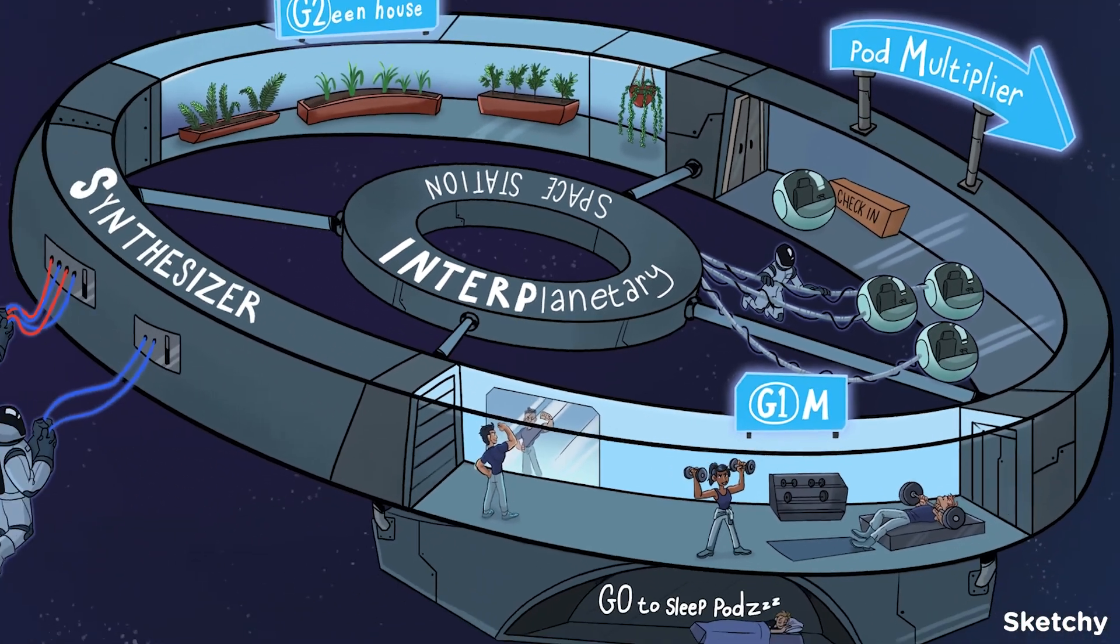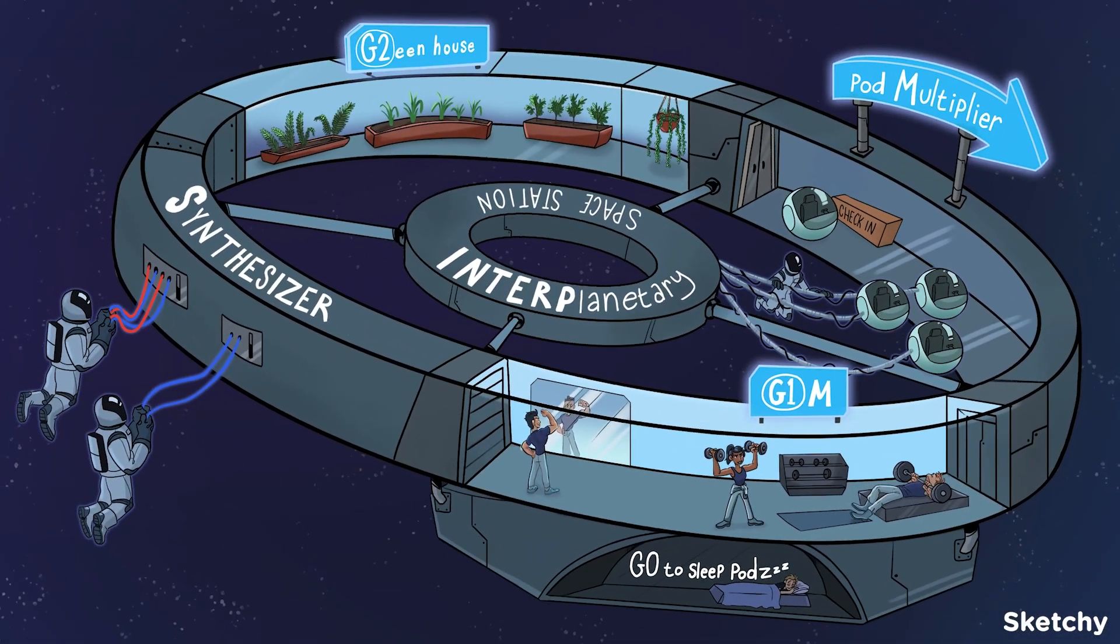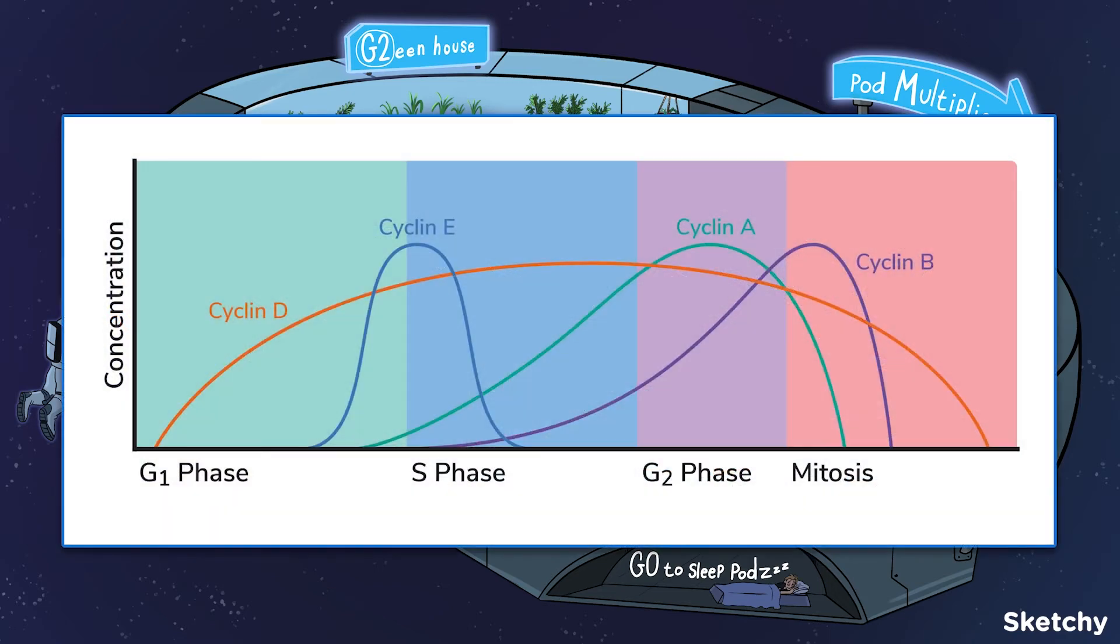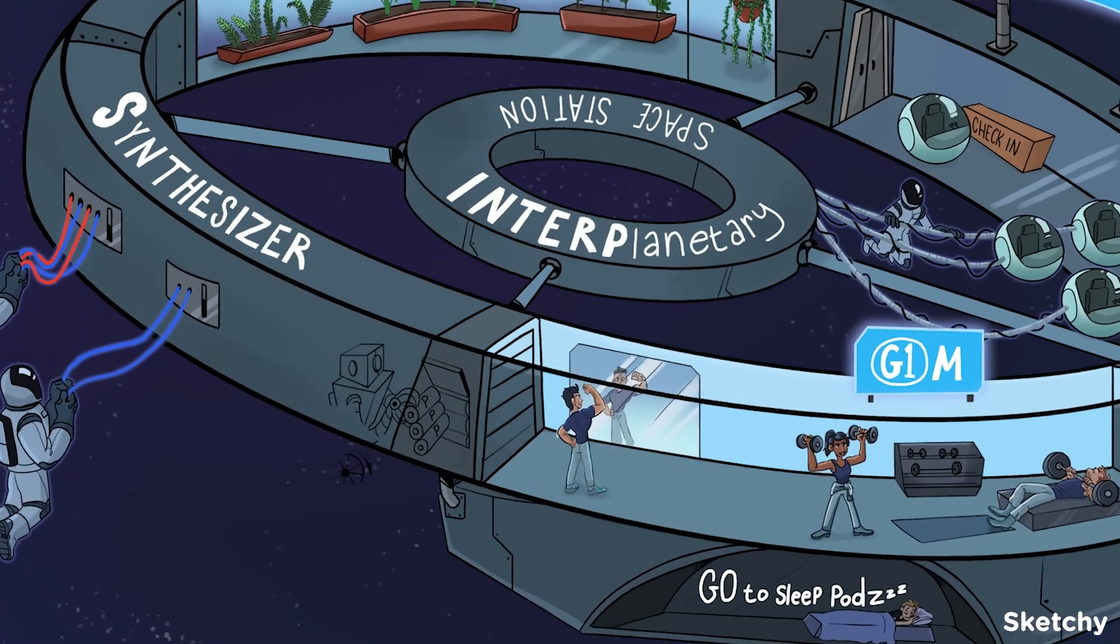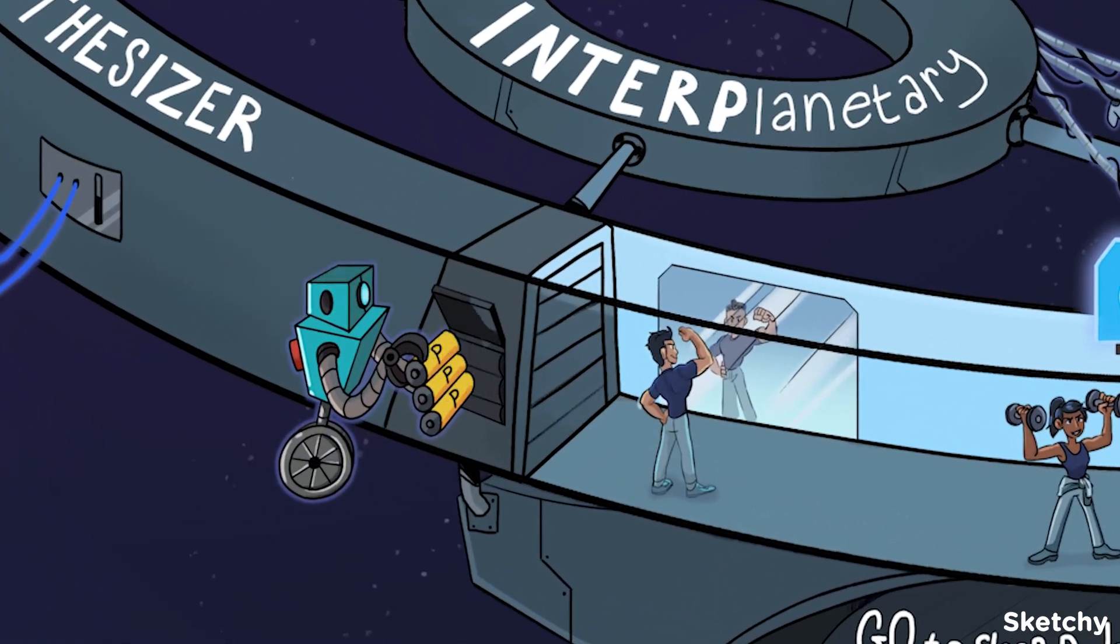Now that we've covered all the checkpoints, let's take a look at how this process is regulated at the molecular level. The main players are cyclins, cyclin-dependent kinases (CDKs), and tumor suppressor proteins. Cyclins are a group of proteins that control progression of the cell through the cell cycle. They're called cyclins because their concentrations fluctuate in a cyclical pattern depending on where we are in the cell cycle. Then there are the CDKs. There are different kinds of CDKs and they are continuously expressed.